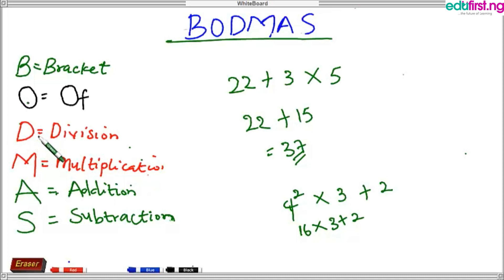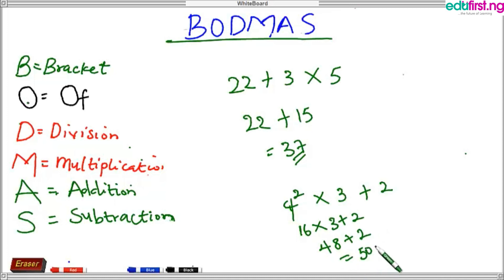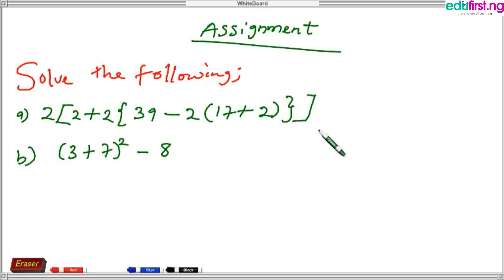The next step after Of is Division — do we have division in our question? No. Multiplication — yes! So we tackle the multiplication: 16 times 3 gives us 48, then bring down the remaining plus 2. We now have just one operator, so we simplify: 48 plus 2 gives us 50. That is our answer. For your assignment — thank you, have a nice day.